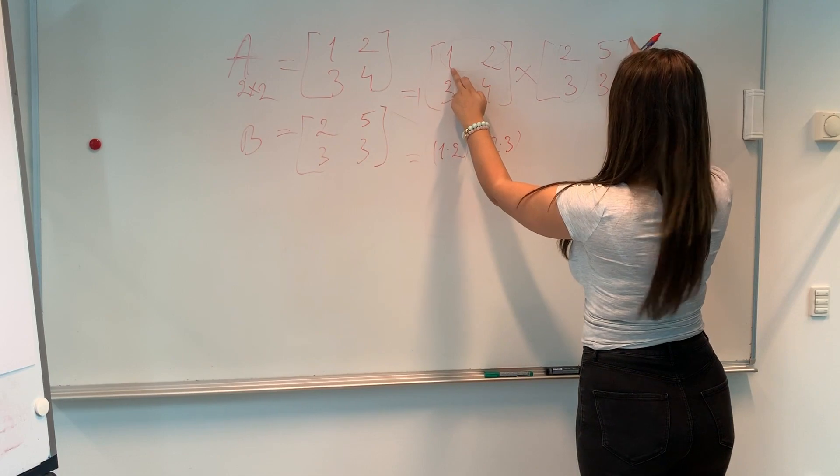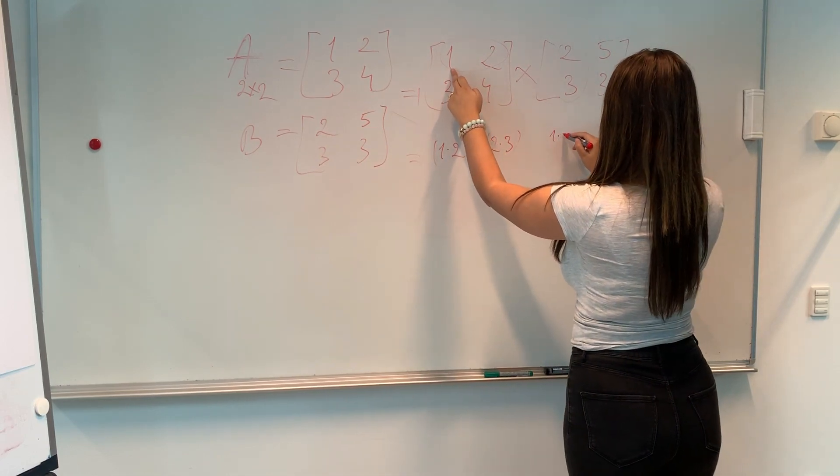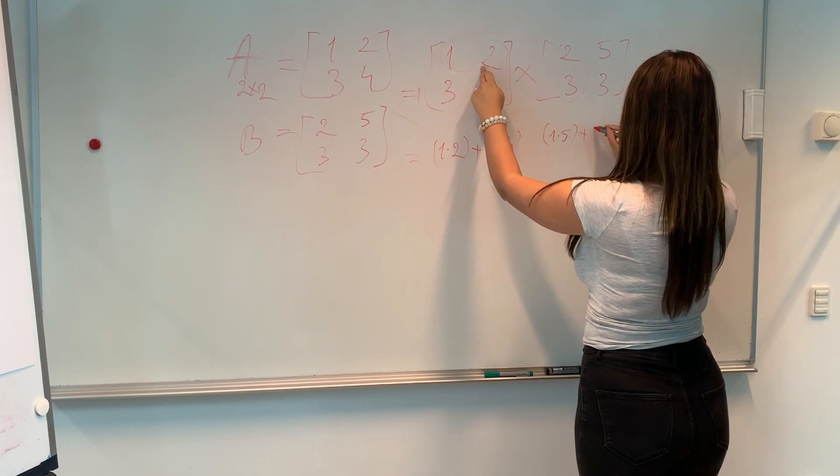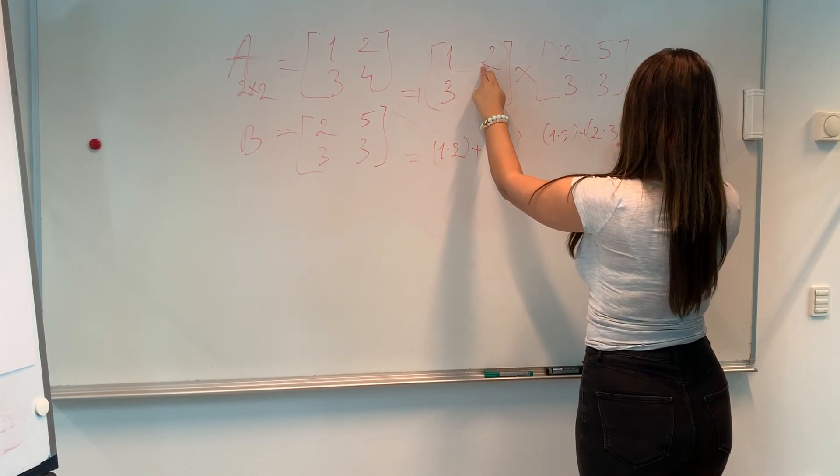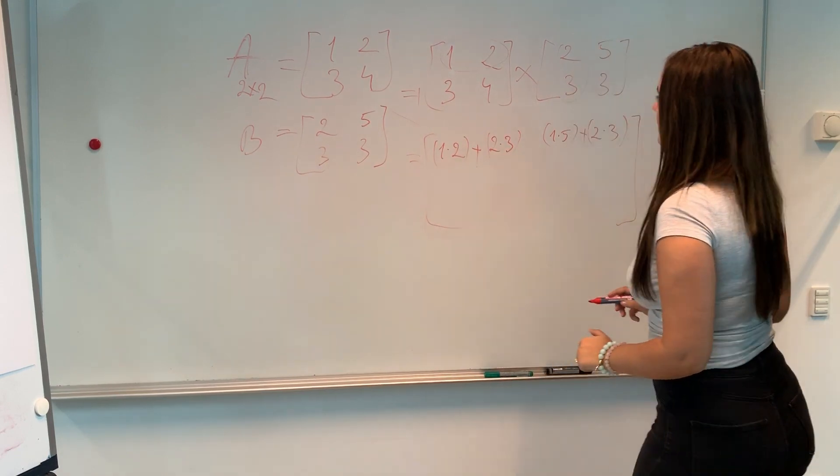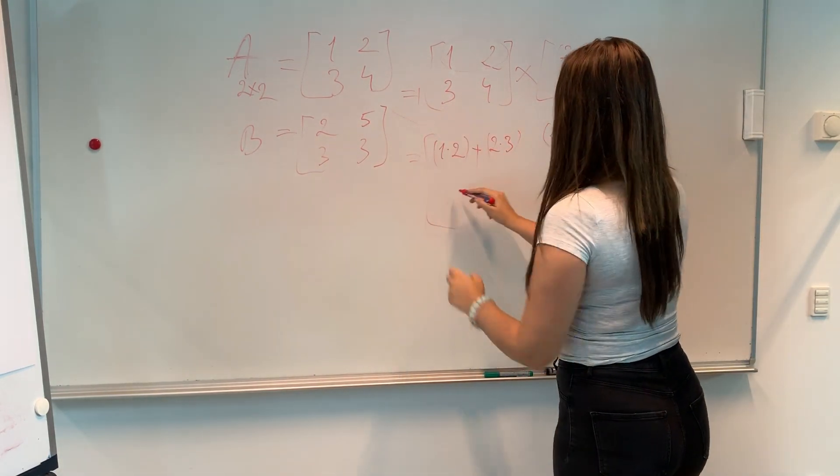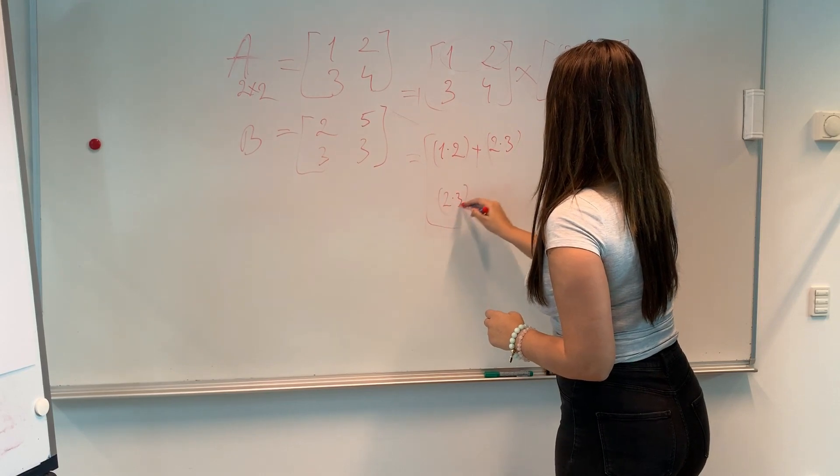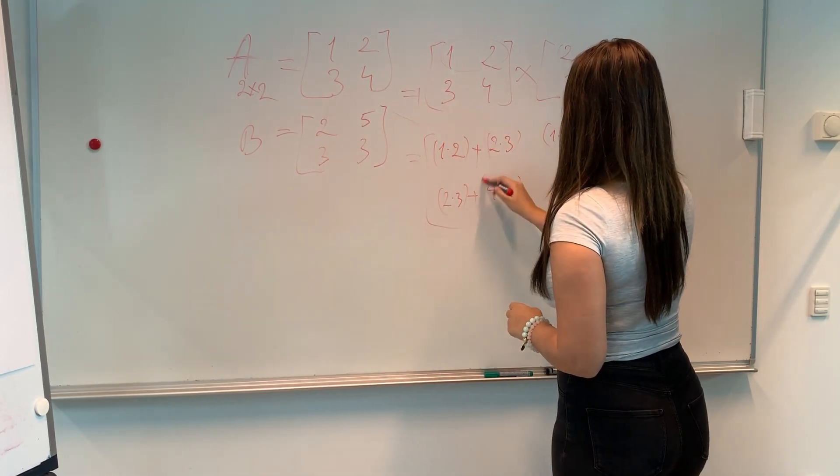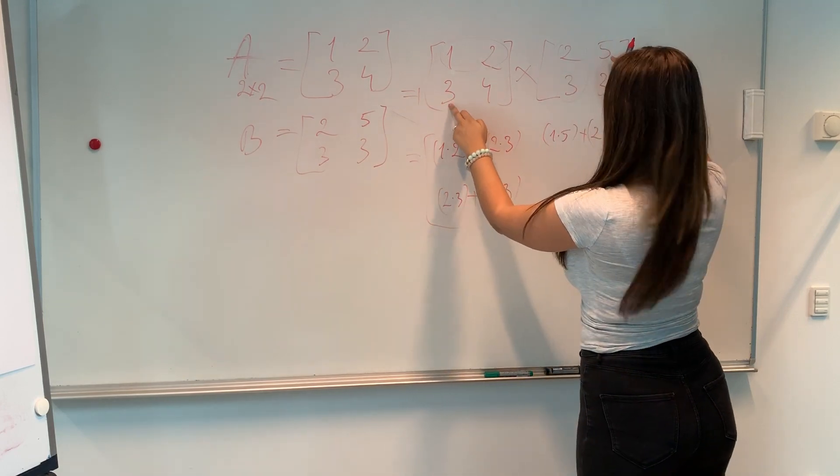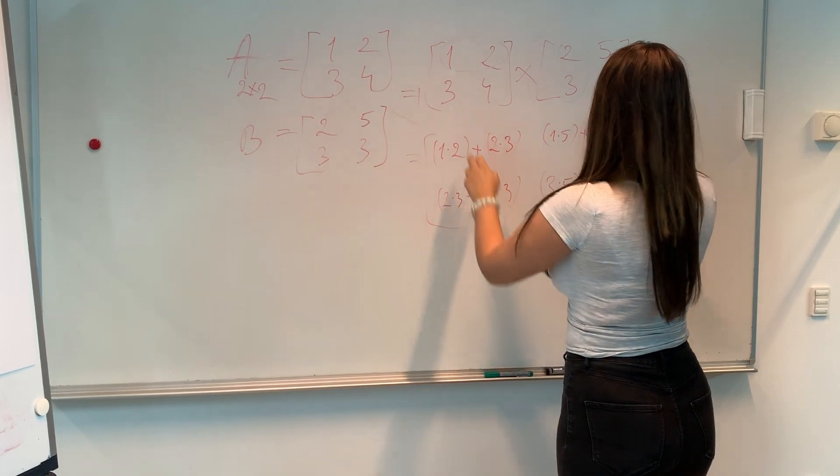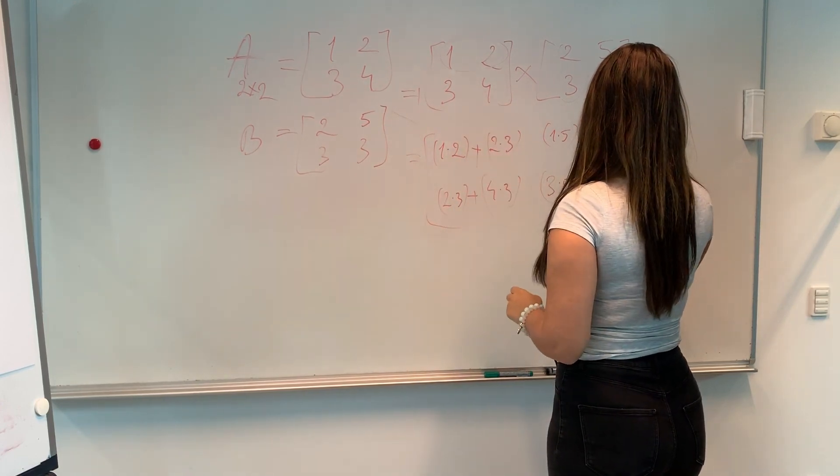And then we go the same. One times five plus two times three. Those are the first two elements. And then we do the same with the next. Two times three plus four times three. And then three times five plus four times three.